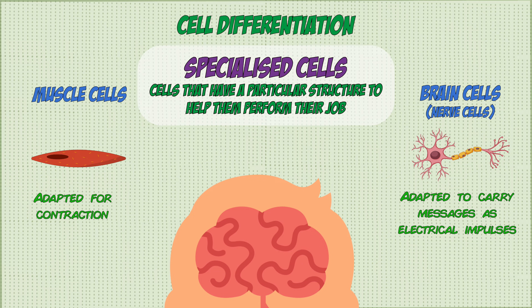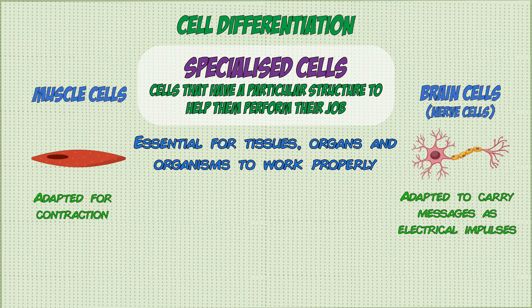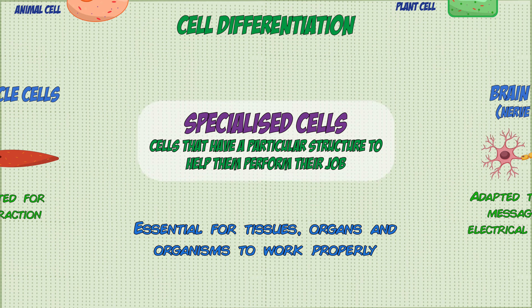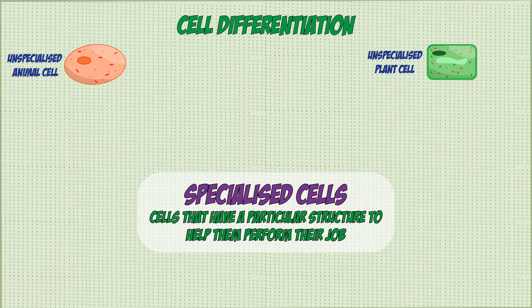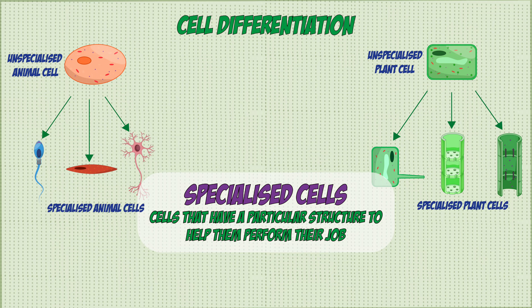This specialization of cells for specific roles is essential for tissues, organs, and even whole organisms to work properly. Cells that are unspecialized are like a blank slate — they can turn into any other type of cell by a process known as differentiation.